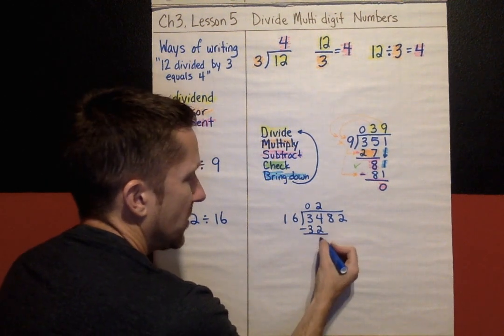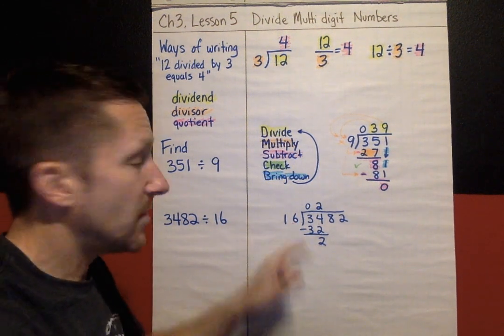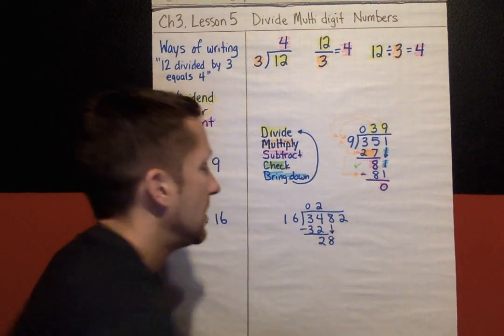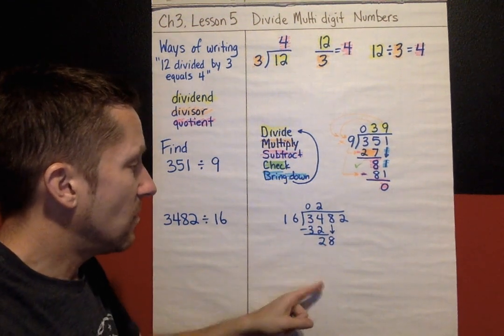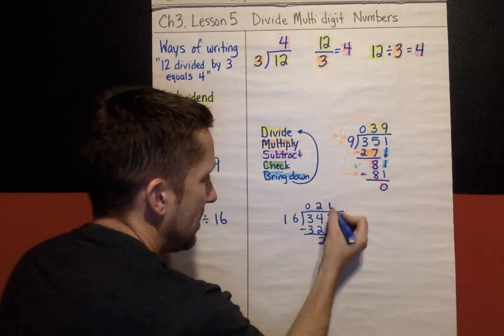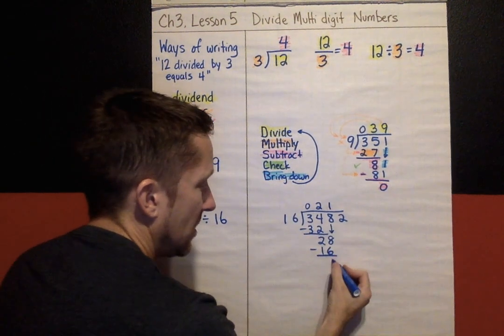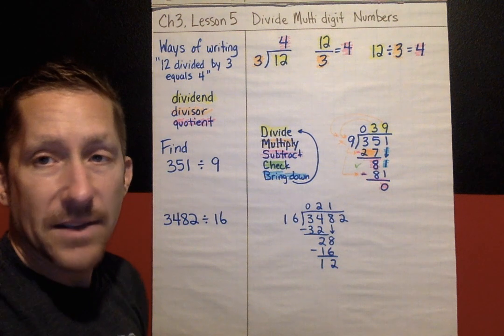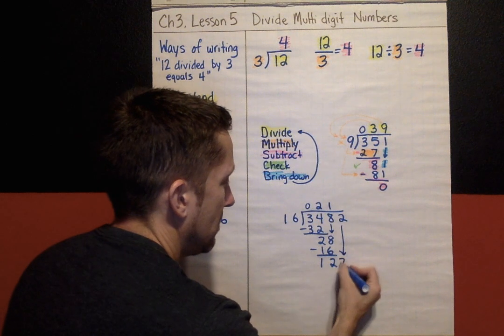2 times 16 is 32. I subtract. 34 take away 32 leaves 2. I check. Is this number smaller than this number? It is. So I can bring down. I can continue and bring down the 8. Then I'm going back to the top again. Dividing. How many 16s fit into 28? Well, 1 for sure. The second one takes me to 32. So it's only 1. 1 times 16 is 16. Subtract is my next step. I get 12. Is 12 smaller than 16? The answer is yes. So I can keep going and bring down the next number.